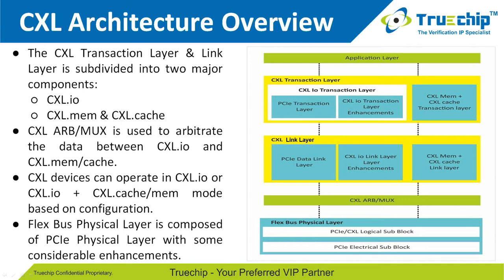In PCIe mode, the ARB/MUX layer is bypassed and only CXL.IO is used. In CXL mode, we have additional Cache and Mem, or both protocols, working.